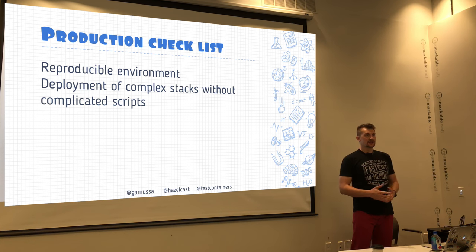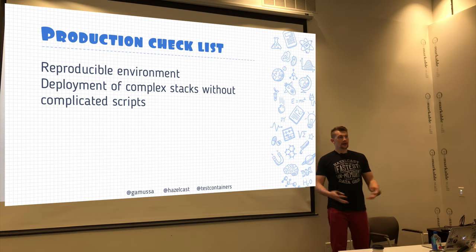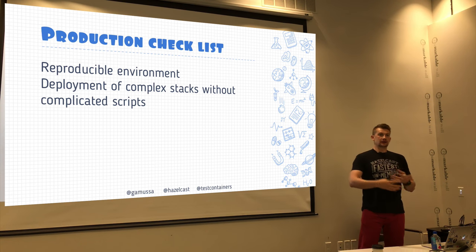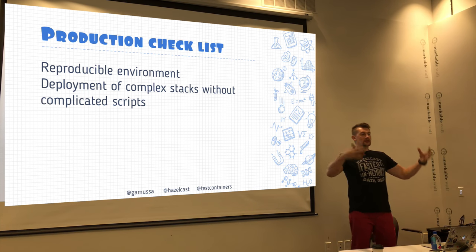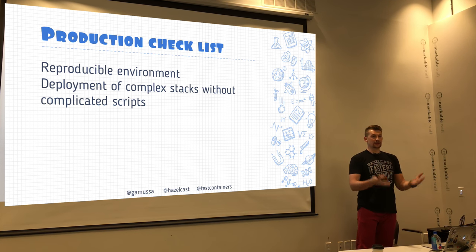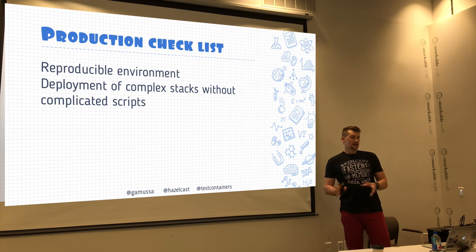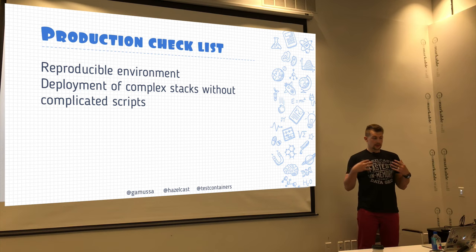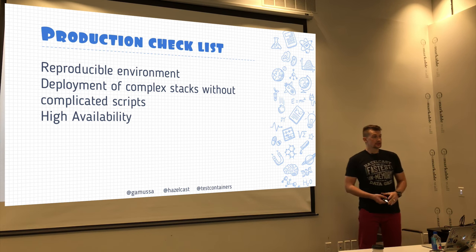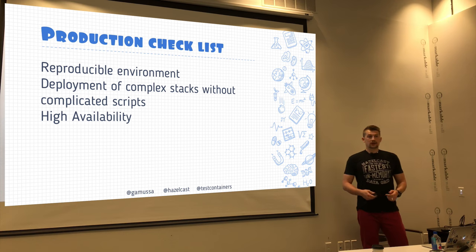In big data environments with complex stacks — Hadoop, Spark clusters, Kafka for messaging, Flink for streaming — deploying requires mad ops skills. Having this stuff containerized simplifies deployment significantly. These days, vendors provide their offerings as Docker images. With orchestration tools like Kubernetes, Swarm, or Mesos, we can achieve high availability.